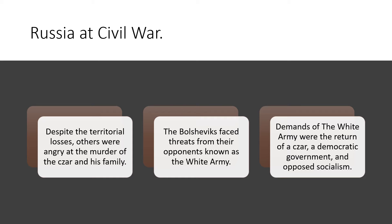Russia descended into civil war. Despite the territorial losses, many others were also angry at the murder of Czar Nicholas II and his family. The Bolsheviks faced threats from their opponents, who became known as the White Army. Some of the demands of the White Army were the return of the Czar, a democratic government, and opposition to socialism, which Lenin was a strong supporter of.